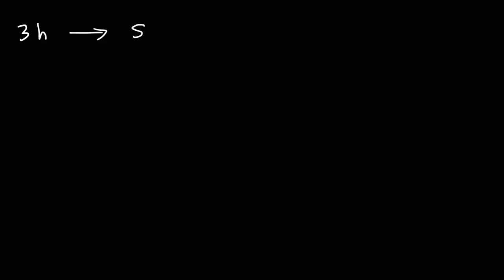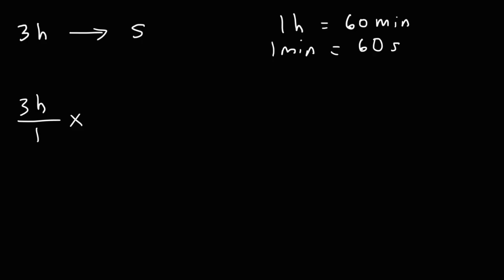This is a two-step conversion process. You need to know that one hour is equal to 60 minutes, and one minute is equal to 60 seconds. Those are the two conversion factors that we need. We're going to start with three hours and first convert hours into minutes. Focusing on this conversion factor, which part should we put on the bottom — the one hour part or the 60-minute part?